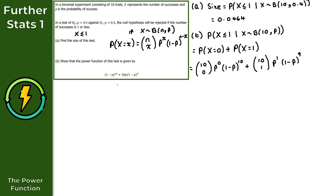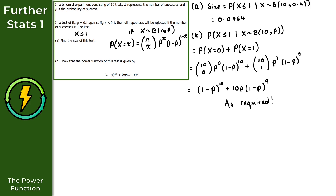Simplifying: C(10,0) = 1 and p^0 = 1, so the first term gives (1−p)^10. C(10,1) = 10, so the second term gives 10p(1−p)^9. Therefore the power function is (1−p)^10 + 10p(1−p)^9, as required. That completes question 2 and brings us to the end of this video on the power function.